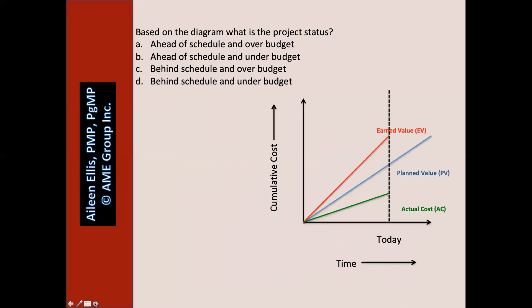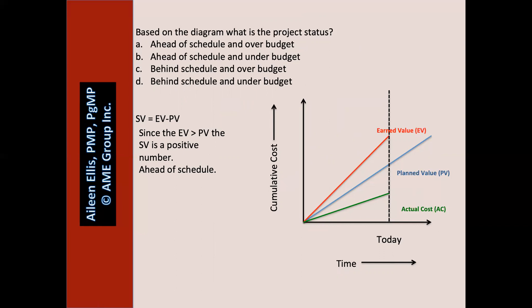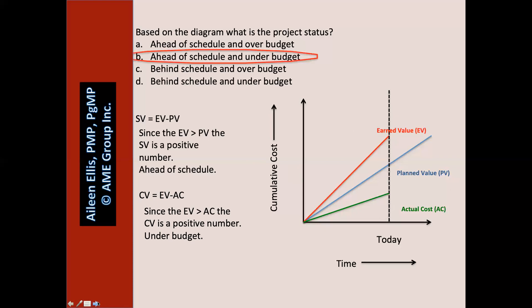Based on the diagram, what is the project status? Pause the video and answer the question. Schedule variance equals EV minus PV. The EV is greater than the PV, so the schedule variance is a positive number — we're ahead of schedule. Now let's also talk about cost: cost variance equals EV minus AC. The EV is greater than the AC, so the cost variance is a positive number — we have more work complete than we spent to complete it. This is a very typical question for the PMP or the CAPM exam.